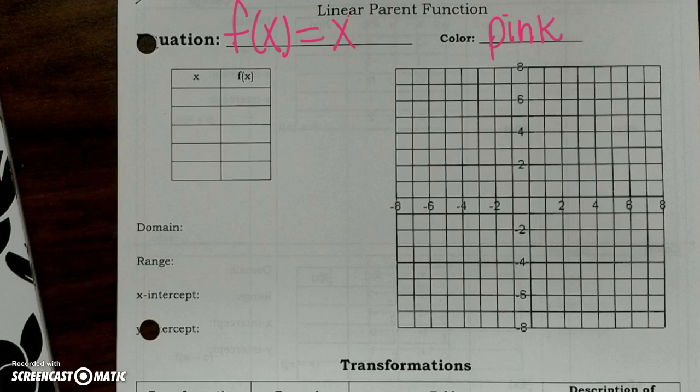My first step is to go ahead and graph the actual equation. So let me figure out what my slope is and what my y-intercept is. What's my coefficient with my x? It is a 1. How would I write 1 as a fraction? It's the same as saying 1 over 1.